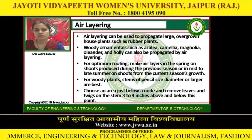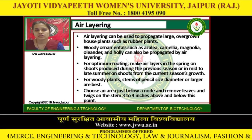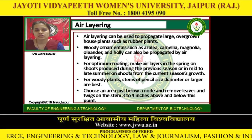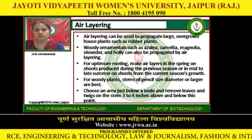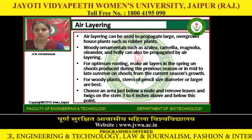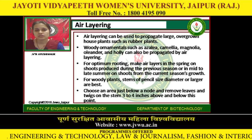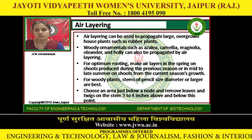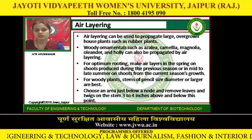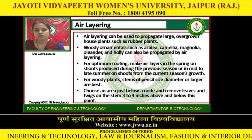Air layering can be used to propagate large overgrown house plants such as the rubber plant. Woody ornamentals such as camellia, magnolia, oleander, and holly can also be propagated by air layering.